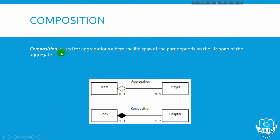Now we have composition, a stronger form of aggregation. Composition is used for aggregations where the lifespan of the part depends on the lifespan of the aggregator.